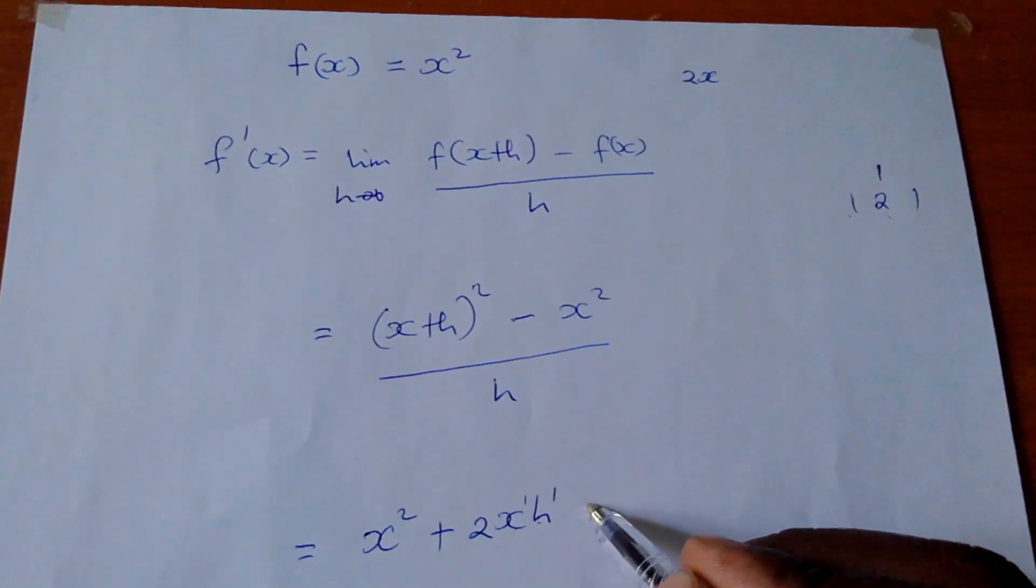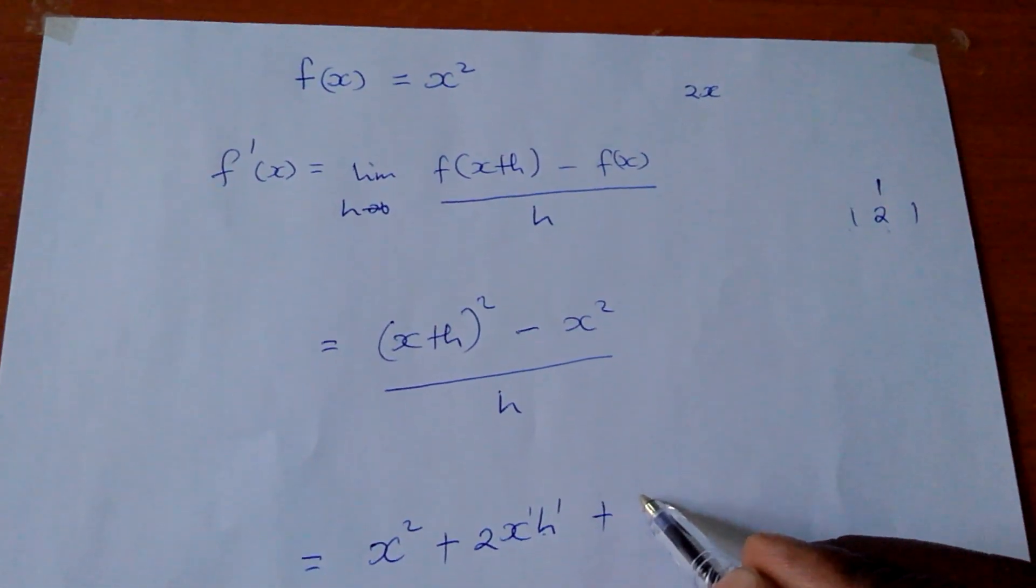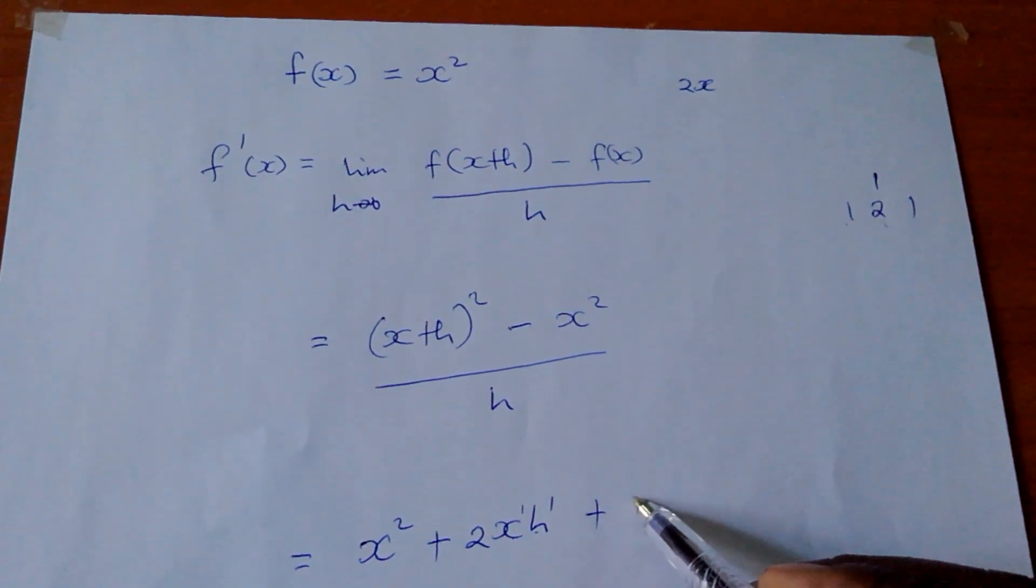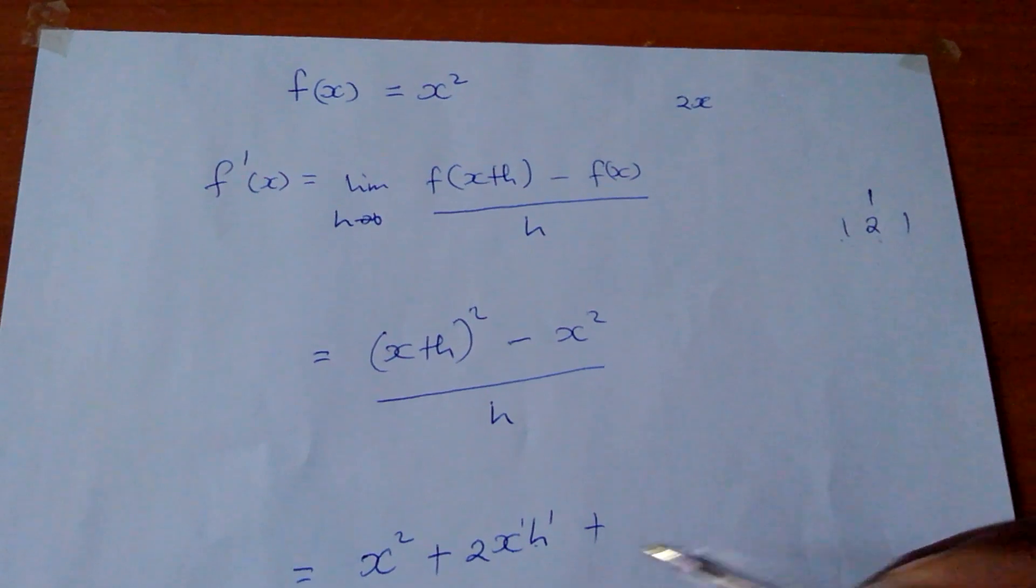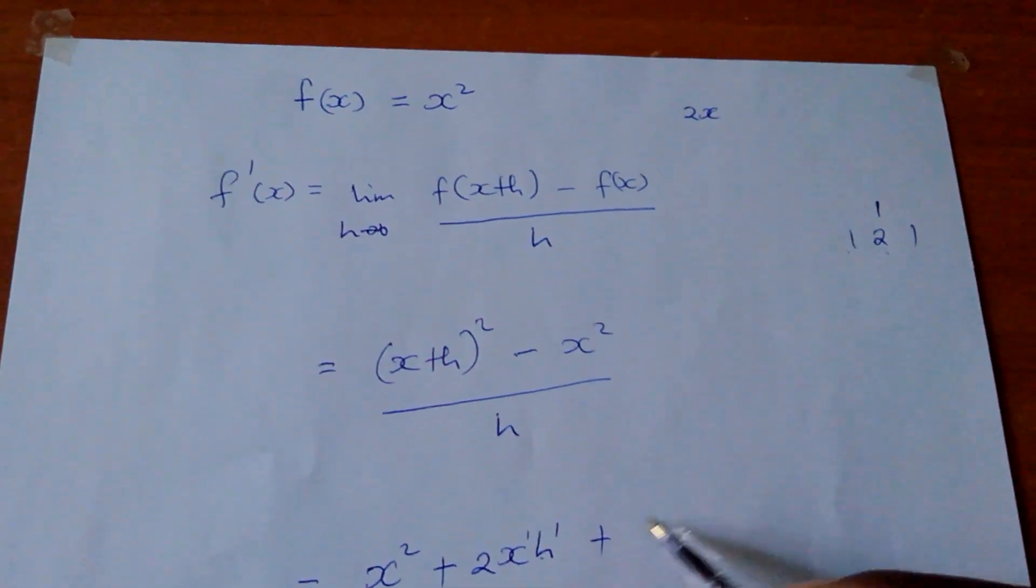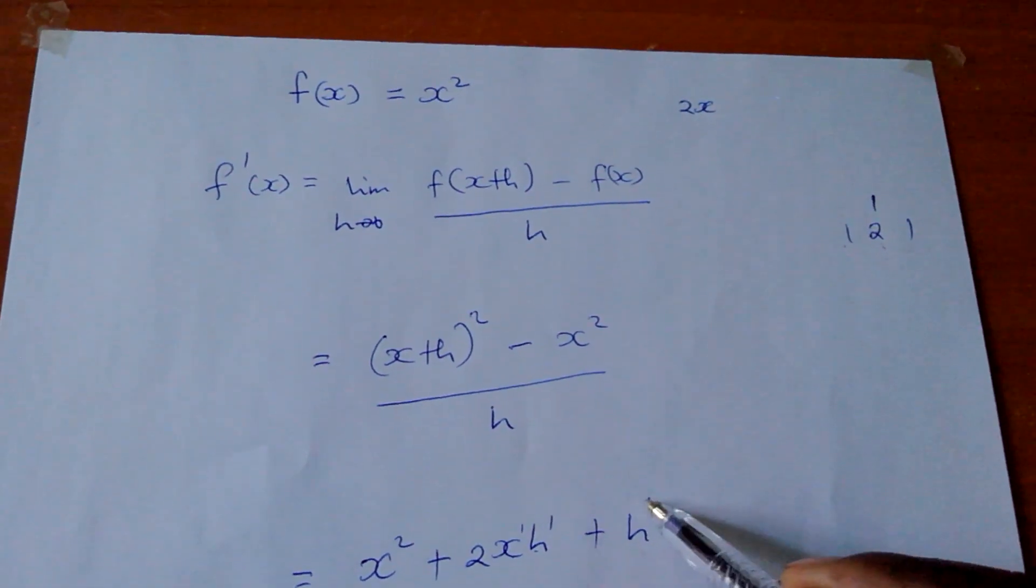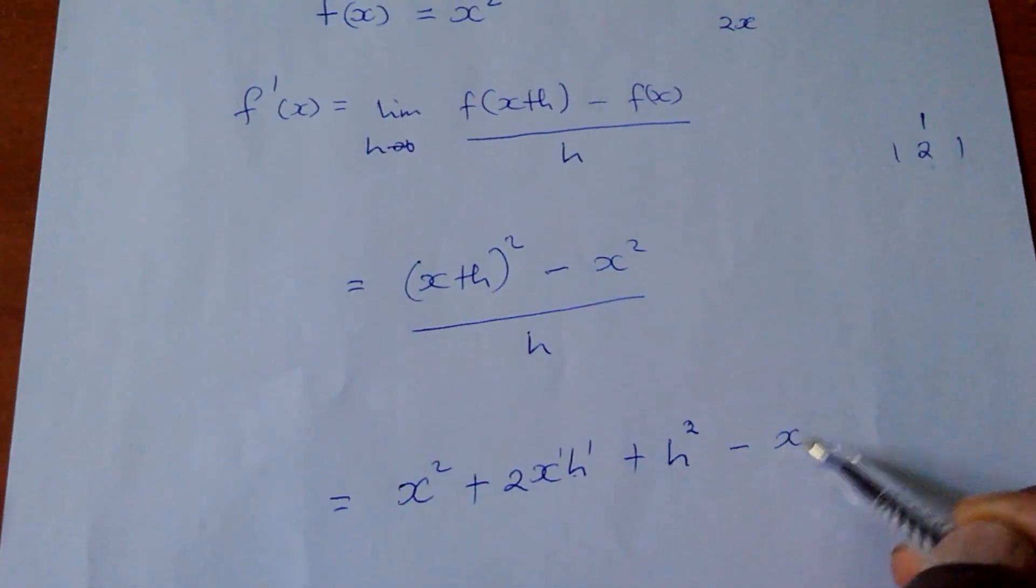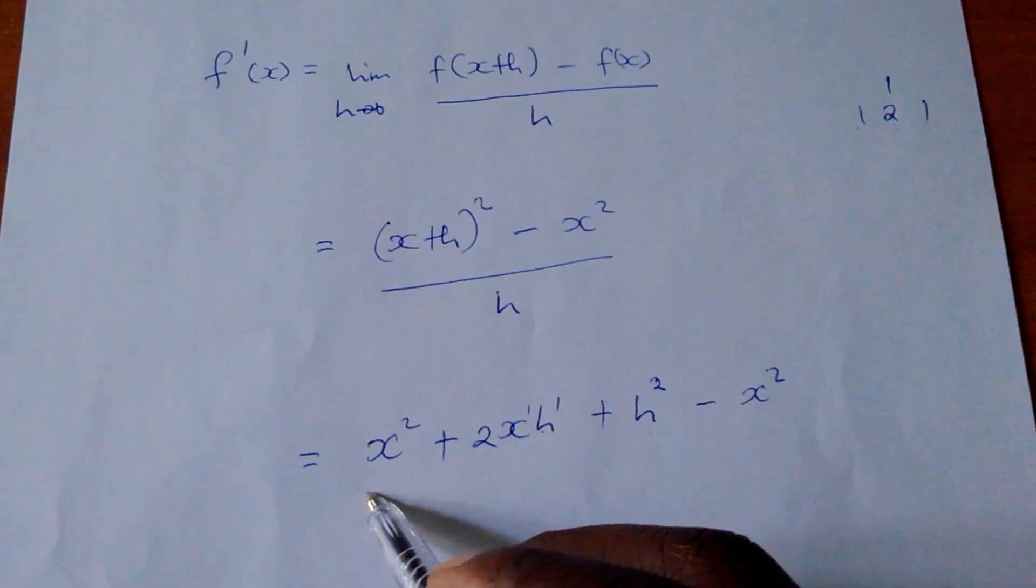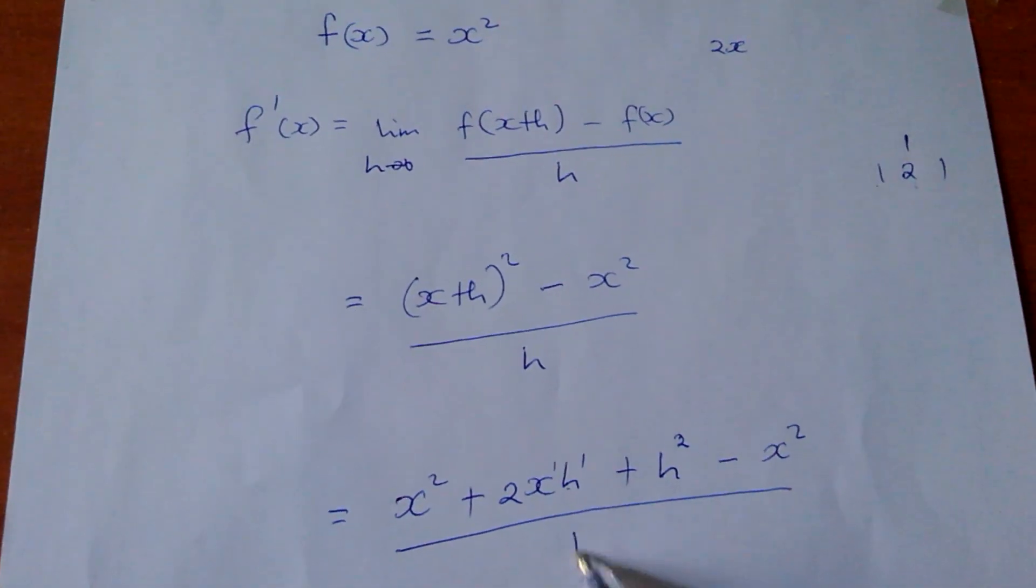Then plus the h squared. The x, of course, it will be to power 0, so no need. And the coefficient 1 times 1, which is 1, and the h will take up the power of 2. Then minus x squared, all over h.